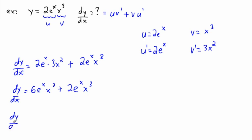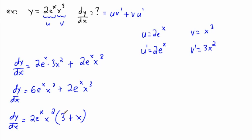We can simplify by factoring out common terms. Both terms have a factor of 2, a factor of eˣ, and a factor of x², so we factor out 2eˣx². That leaves 3 from the first term and x from the second, giving dy/dx equals 2eˣx²(3 + x). This is the derivative of our original equation — if you want the slope of the tangent at any point, this is it.